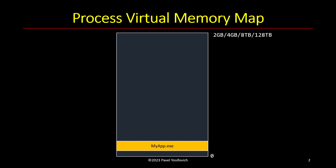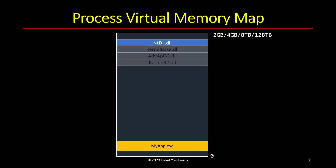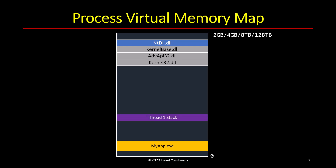First, we have the executable being mapped by the kernel, and the same goes for NTDLL — known as the loader — which provides support for native APIs and system calls. There are also other DLLs like kernel32 and advapi32, stacks for each thread in the process, and the default process heap.